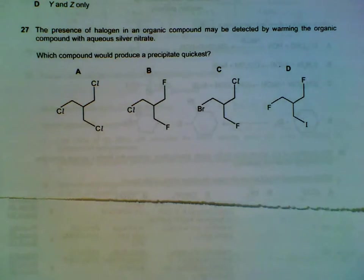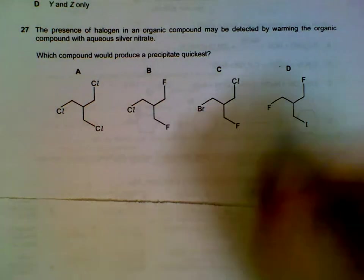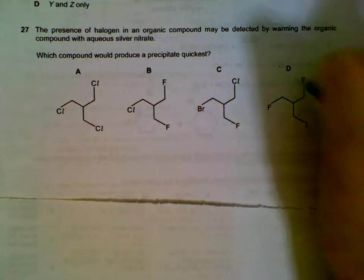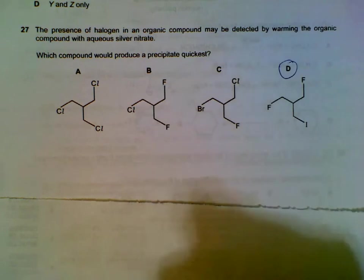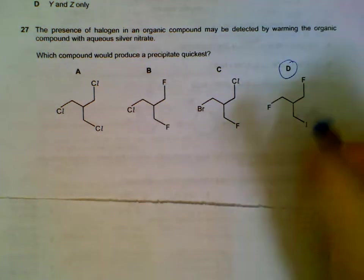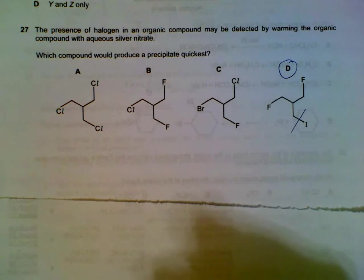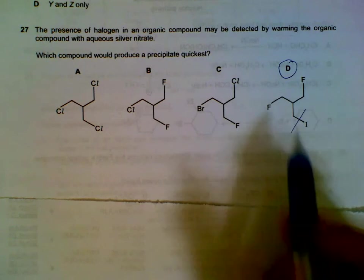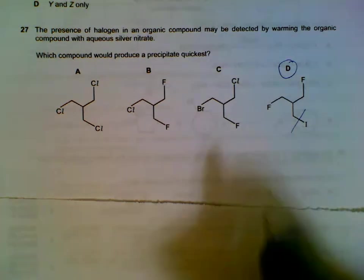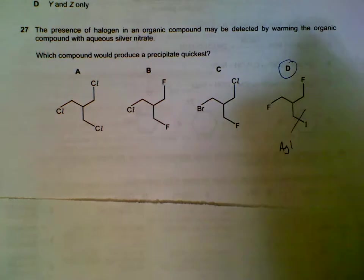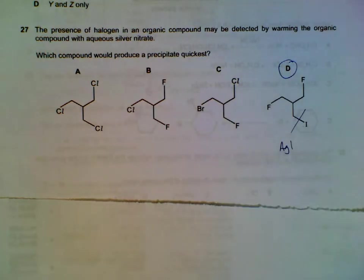Question 27: which one will we get the fastest precipitate? The one that contains the iodine, the iodide, will be the one that releases the halides the fastest because of the weakest bond. So your AgI will form the fastest, so we will see our precipitate the quickest.